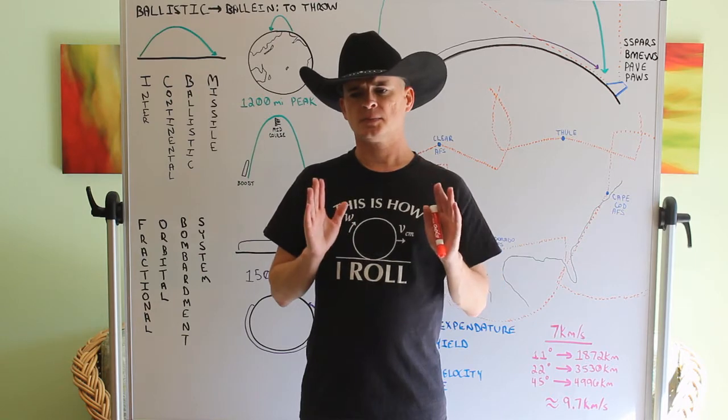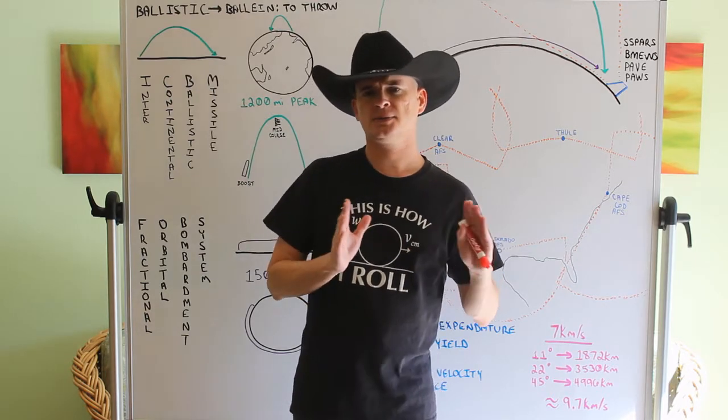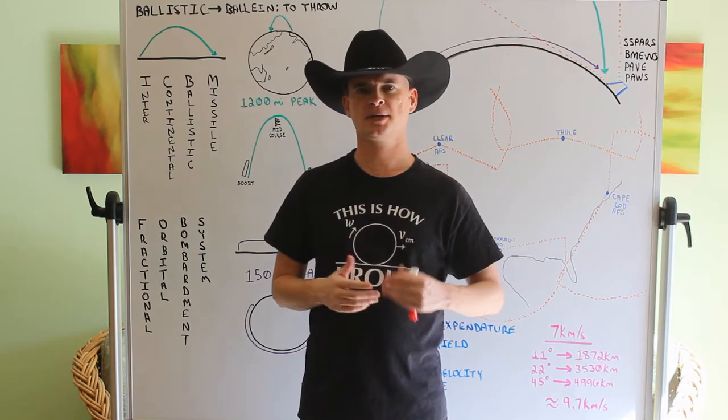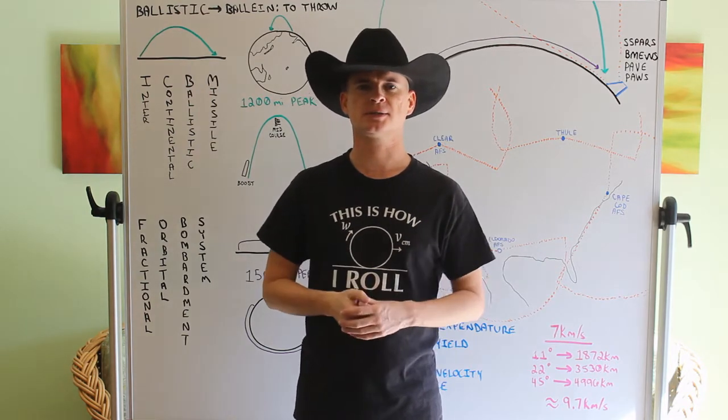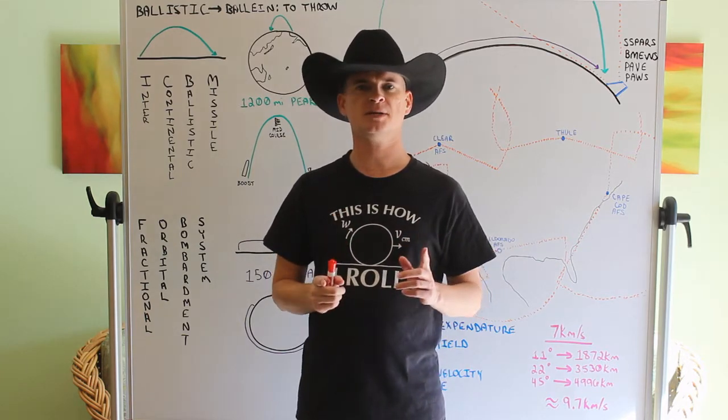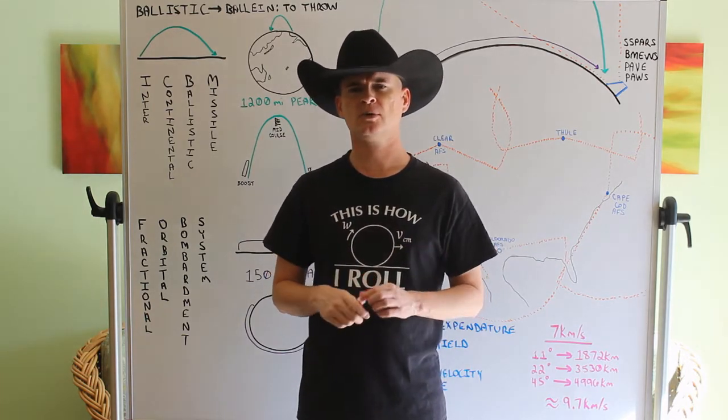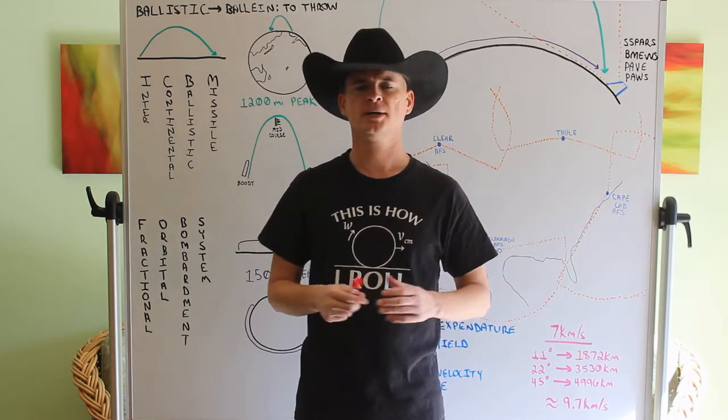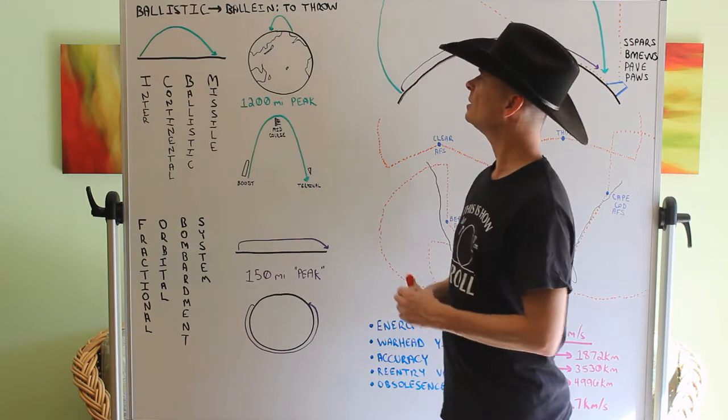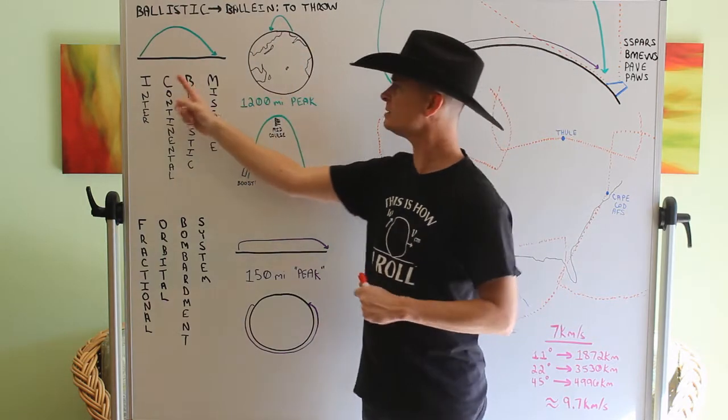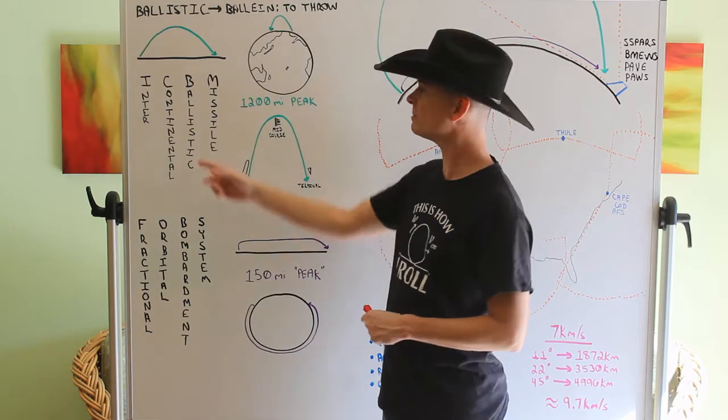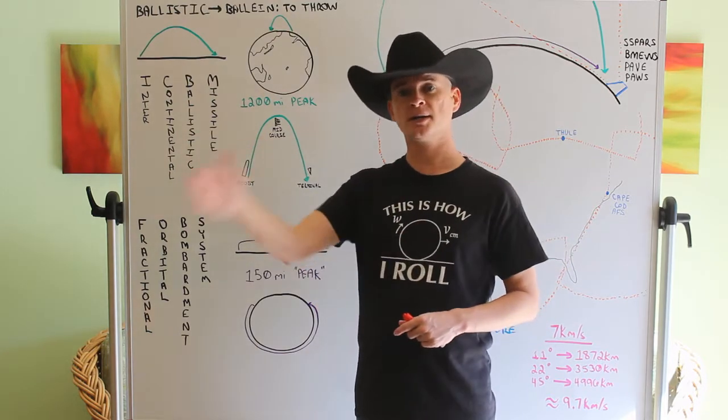But before we can get to that system, we want to go over some other things that preceded it and still exist today. So let's take a look at what an ICBM is, basically, but more importantly, how they work. So what is an ICBM? It's an intercontinental ballistic missile. It can go from one continent to another.